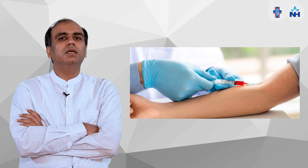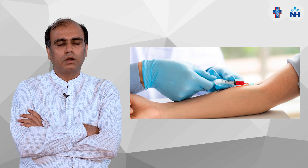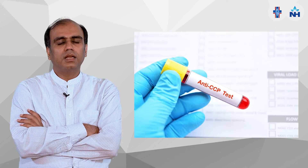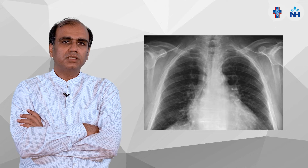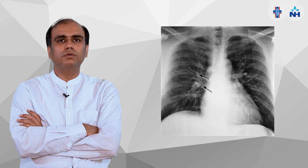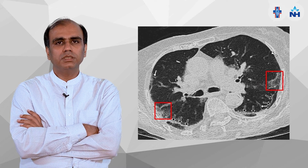How can we diagnose ILD? We have to order some simple blood tests and some special tests which diagnose connective tissue disorders, such as ANA, rheumatoid factor, and anti-CCP. Simultaneously, we have to order imaging — a simple chest X-ray. If the chest X-ray shows some defect like reticular shadows, we have to order the gold standard test: HRCT — high resolution CT scan.